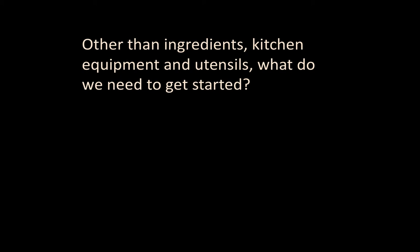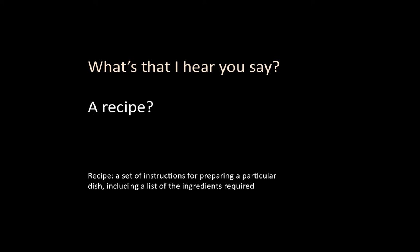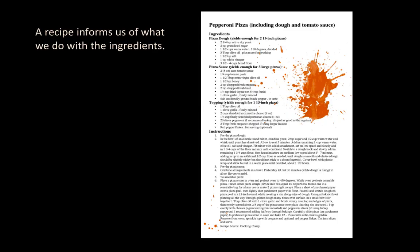Other than ingredients, kitchen equipment, and utensils, what do we need to get started? A recipe. A recipe is a set of instructions for preparing a particular dish, including a list of the ingredients required. Here's our pepperoni recipe. Our recipe informs us of what we do with the ingredients.